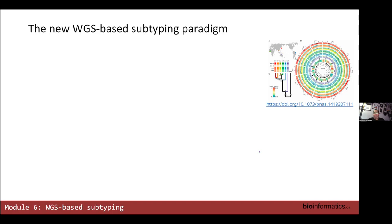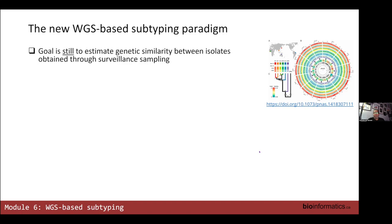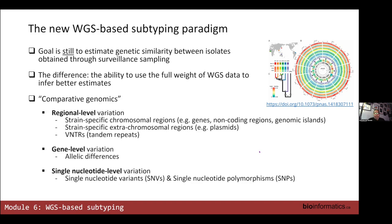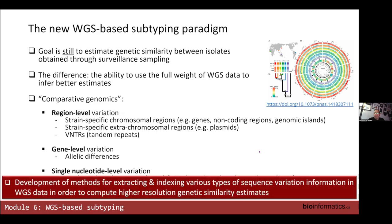In the new paradigm we're generating WGS data and still trying to estimate genetic similarity, but now using whole genome sequence data. Depending on how you analyze that data you get better and better estimates of genetic similarity. It really centers around concepts of comparative genomics and the level of granularity applied to the comparative genomic analysis. At the end of the day, all WGS-based typing is about trying to extract and index some form of sequence variation information to estimate genetic similarity at high resolution.